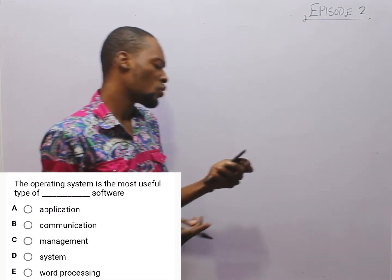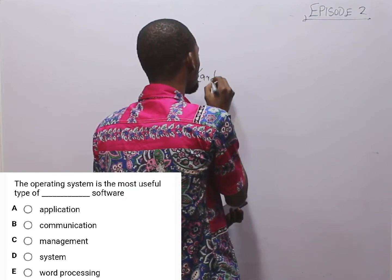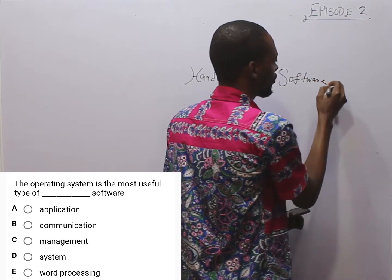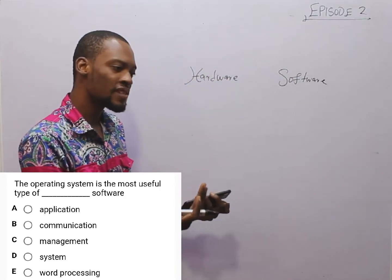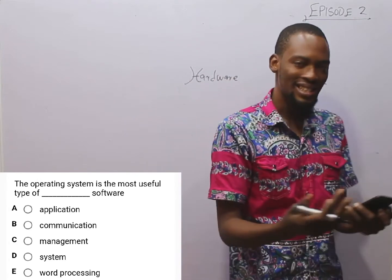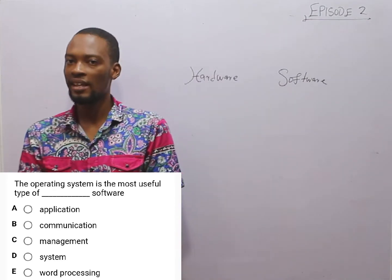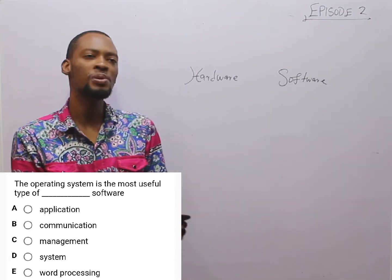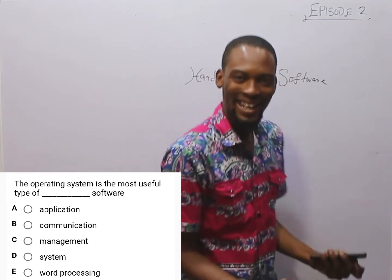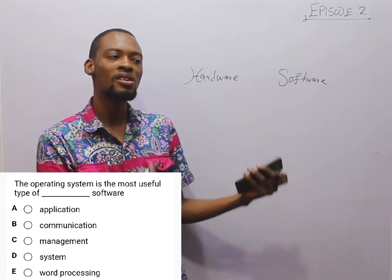In computer, we have hardware and software. Remember, a computer is an electronic device capable of accepting data, processing data, and bringing out the result as output — garbage in, garbage out. Accepting input is done by input devices: keyboard, mouse, mic. Processing input is done by the central processing unit or graphical processing unit.